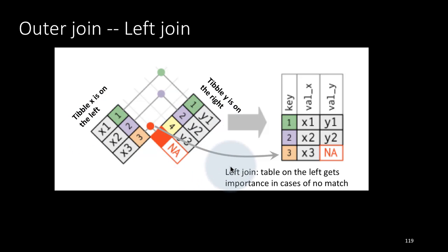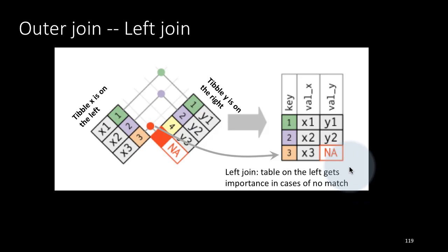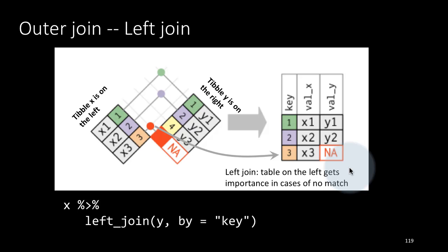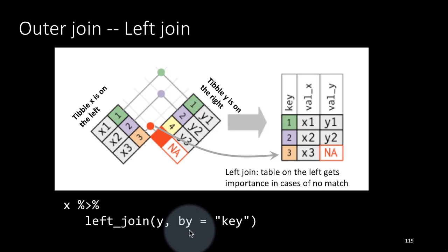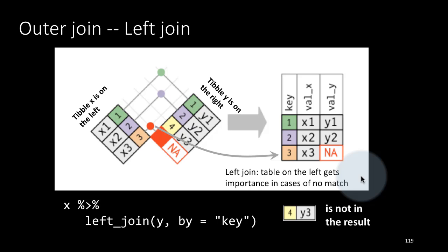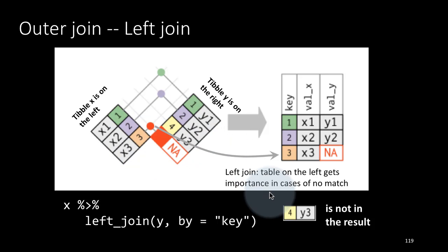When you do a left join, the tibble on the left gets importance in the case of no match. The R code is x piped to left_join(y, by='key'), which produces the result with key=3, val_x=x3, val_y=NA included. Notice that y3 (key=4) is not in the result at all because there was no match, but x3 (key=3) is in the result even with no match because we did a left join and x is on the left.